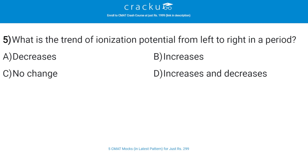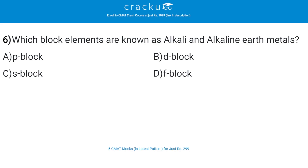What is the trend of ionization potential from left to right in a period? The correct answer is B — it increases. First ionization energy generally increases as you move left to right across a period. This is due to increasing nuclear charge, which results in the outermost electron being more strongly bound to the nucleus.